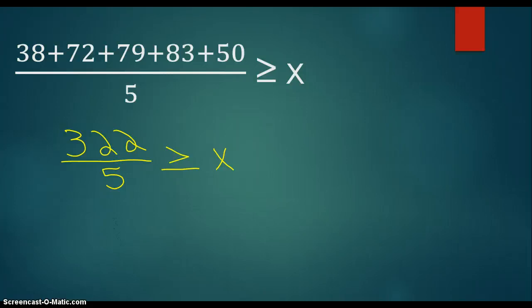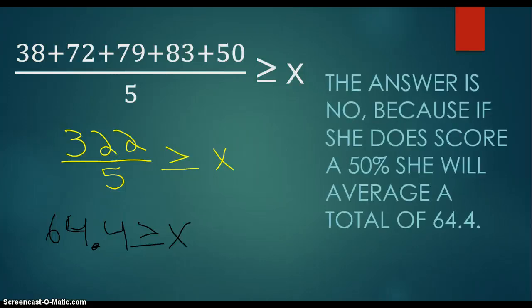After that I would do as it says, 322 divided by 5. And I got 64.4 ≥ x. So the answer is no, because if she did score a 50% she will get an average of a 64.4 which is a D. And that is not a B.